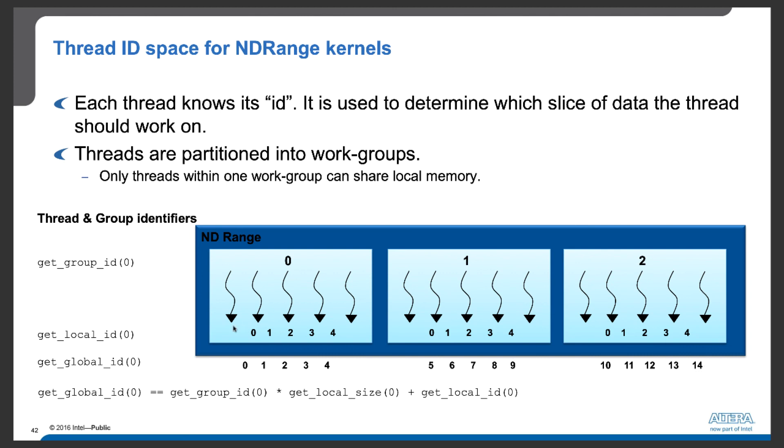Within each work-group, we also have identifiers, and those are called local IDs. So among these five threads in work-group 0, their local IDs are 0, 1, 2, 3, and 4.